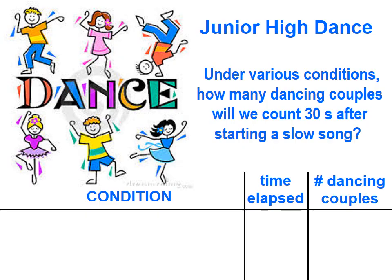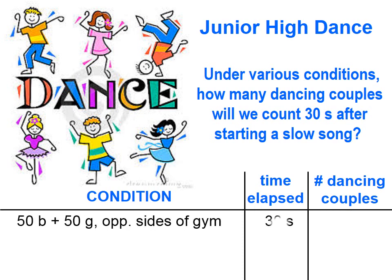Let's illustrate a few of these points with an analogy of a junior high dance. Under various conditions, how many dancing couples will we count 30 seconds after starting a slow song? Let's just pretend — we're going to start with 50 boys and 50 girls.